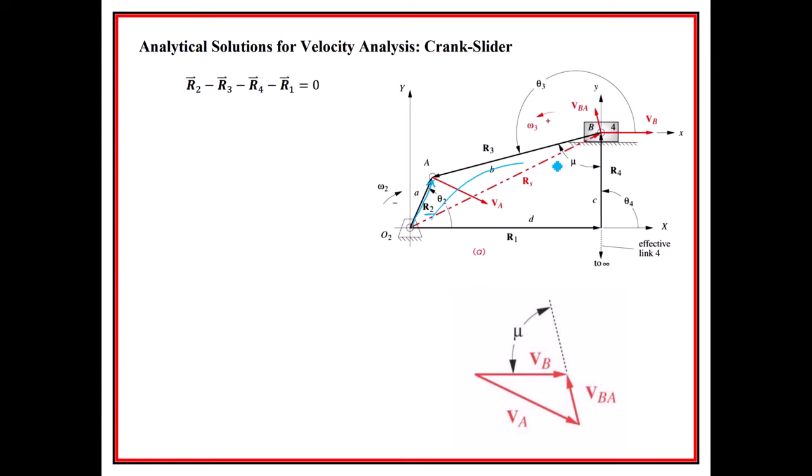As we make this vector loop, you'll see that we go R2, and then we're going backwards up R3, and then we're going backwards against R4 and backwards against R1. So we end up writing out the equation as a*e^(j*theta2) minus b*e^(j*theta3) minus c*e^(j*theta4)